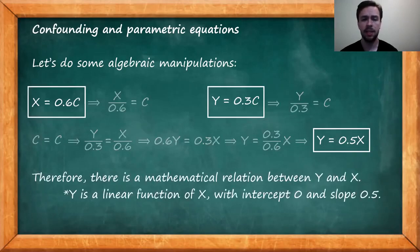So from this derivation, we can see that based on the pair of parametric equations, we can arrive at a third equation that relates X and Y directly without mentioning the parameter C. Therefore, we can conclude that there is a mathematical relationship between X and Y. More specifically, in our example, Y is a linear function of X with intercept 0 and slope of 0.5 and this relationship is of course non-causal as we discussed already.